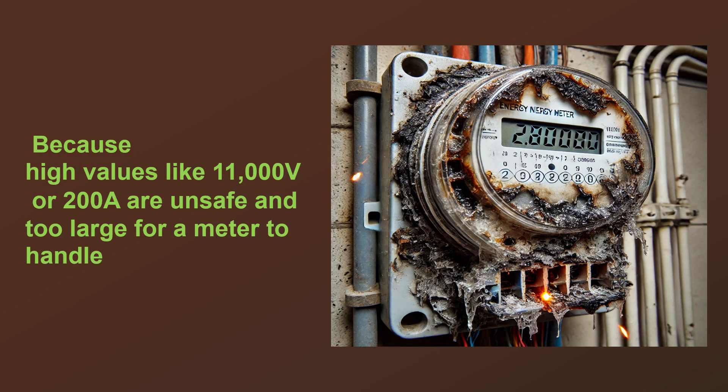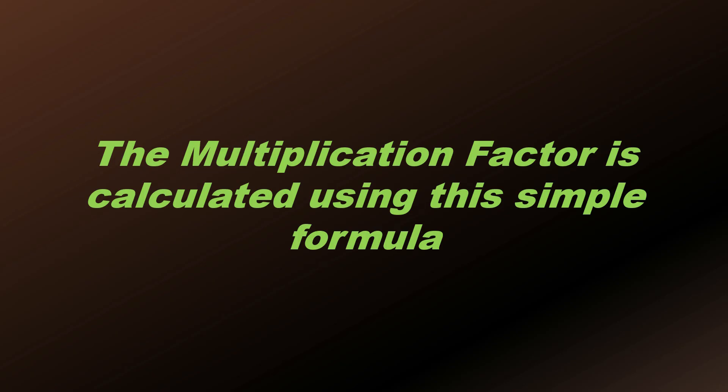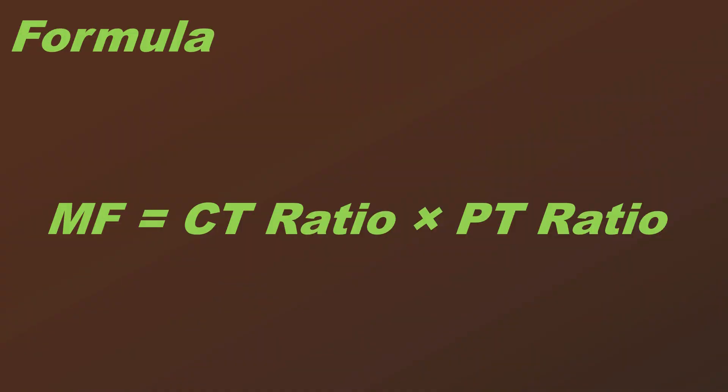The multiplication factor is calculated using this simple formula: MF = CT ratio × PT ratio.